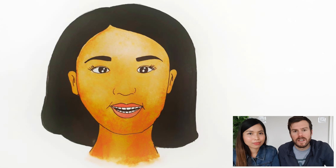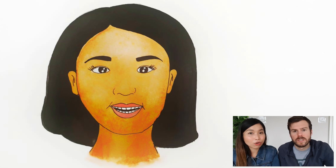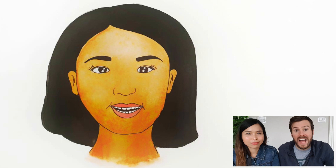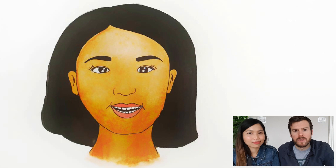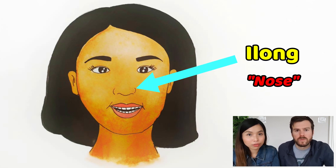And then we have eyelash — piluk. Eyelash is piluk. The eye — mata. Eye is mata. Moving down slightly, we're going to the nose — ilung. Nose is ilung.